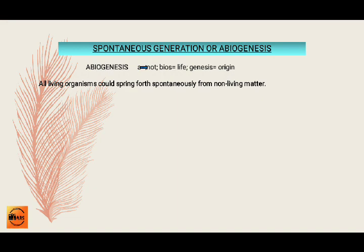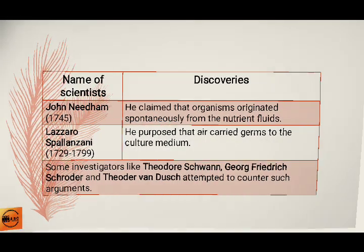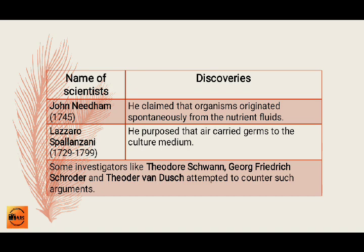Then the concept of spontaneous generation came, also called abiogenesis. According to this, all living organisms could spring forth spontaneously from non-living matter. Francisco Redi carried out a series of experiments on decaying meat and its ability to produce maggots. Maggots appeared only in those jars in which flies were allowed to go in freely and lay their eggs on the meat.